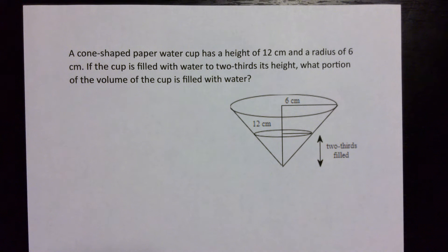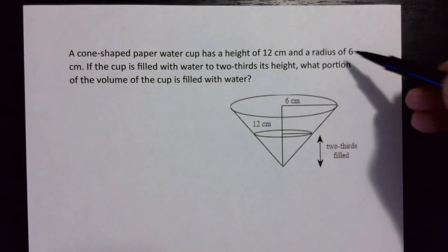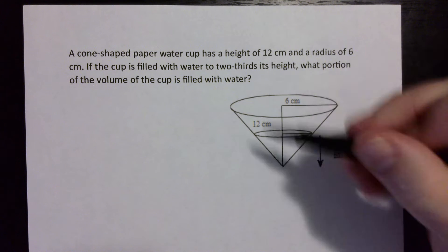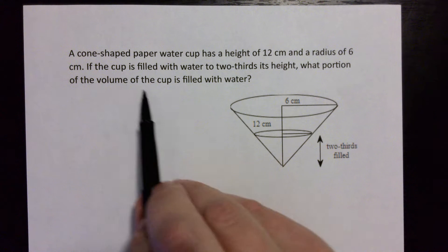In this video we have a cone-shaped paper water cup which has a height of 12 centimeters, that's this right here, and a radius of 6 centimeters which is this right here. So this entire cone-shaped cup has a height of 12 and a radius of 6.